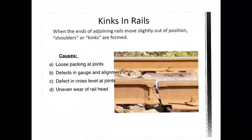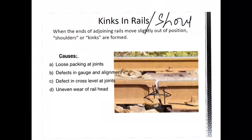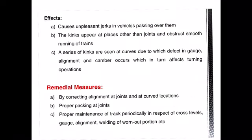The next defect is kinks in rails. When the ends of adjoining rails slide out of position, that defect is called kinks in rails or shoulders in rail. The causes for kinks include: loose packing at the joints, defects in gauge and alignment, defects in cross level at the joints, and uneven wear of the rail head.